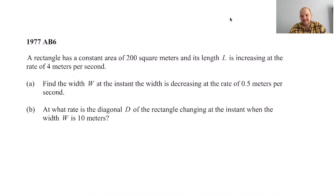1977, back in the day. A rectangle has a constant area of 200 square meters, and its length L is increasing at the rate of 4 meters per second.